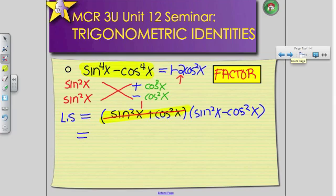So I have 1 times sine squared x minus cosine squared x. Since that goes, it kind of disappears because it's a 1, all I'm left with is sine squared x minus cosine squared x.